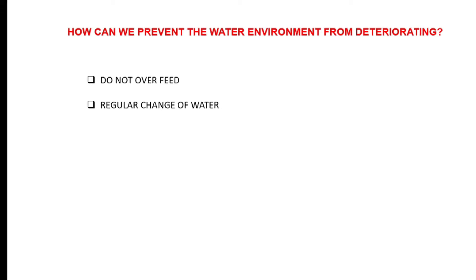There are two things you need to do to prevent water from deteriorating. First, do not overfeed — I have talked about the effects of overfeeding in my previous videos. Secondly, do regular water changes. You need to be changing water once you start to observe that the water is dirty or cloudy. As a farmer, you know when to change water yourself.